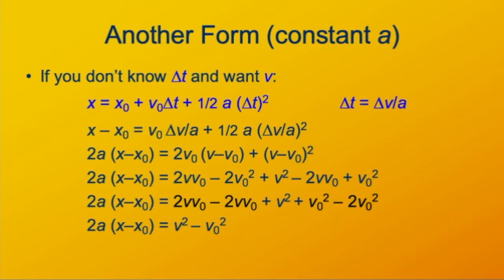What's left, look at that, v² minus v₀². Or we can rearrange that slightly. The square of the final velocity is equal to the square of the initial velocity plus twice the acceleration times the distance traveled.